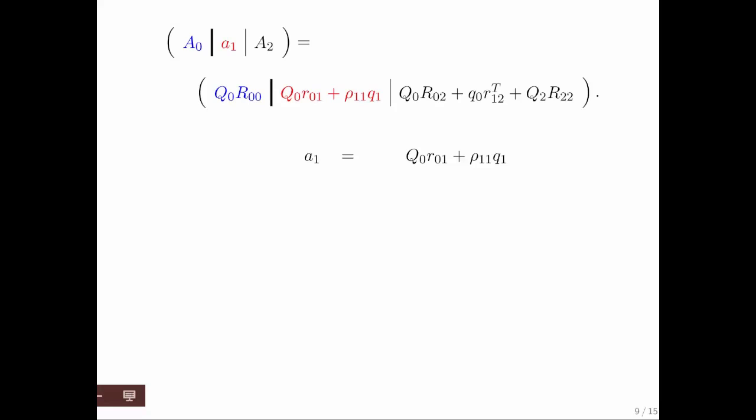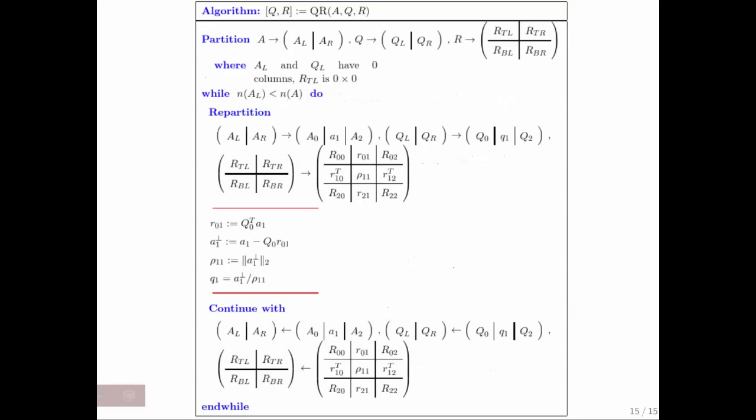So now let's go back to this equation right here. And now we know A1, we know Q0, we know R01. This here is actually the component of A1 orthogonal to the column space of Q0. So that's just A1 perp. And then all we need to do is compute the length of A1 perp and divide A1 perp by that length. And we have computed our next column of Q.